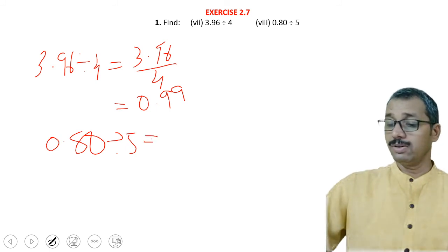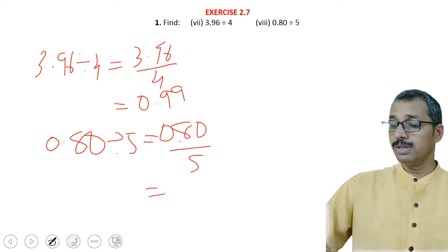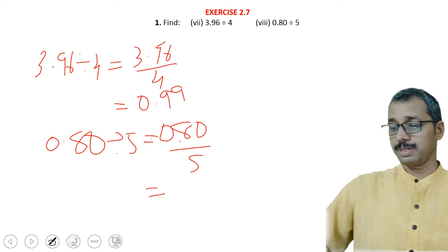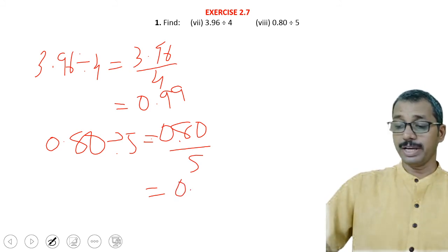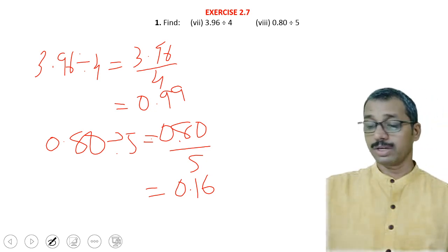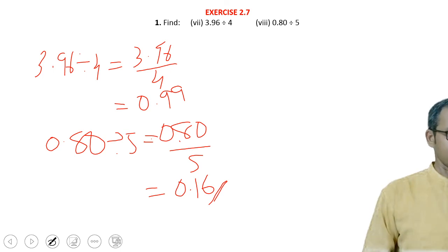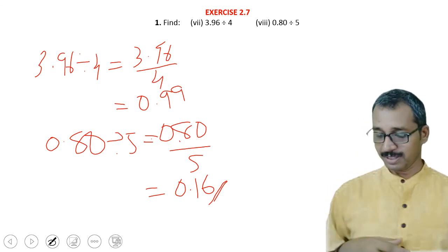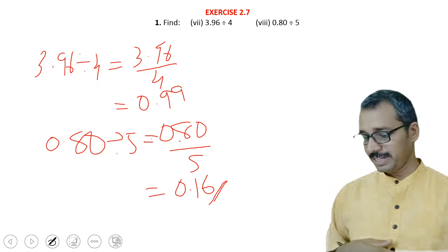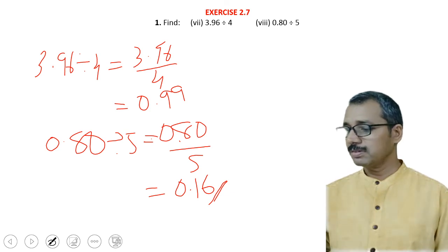The next example is 0.80 divided by 5, which equals 0.80 upon 5. There are two decimal places. In 0, it is 0. In 8, 5 goes one time, remainder 3. Bringing down 0 makes 30: 5 sixes are 30. So 0.16 is the answer. I hope you understand it well — do practice, and bye!